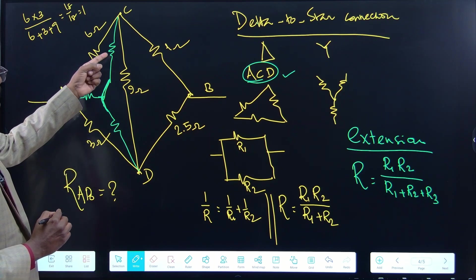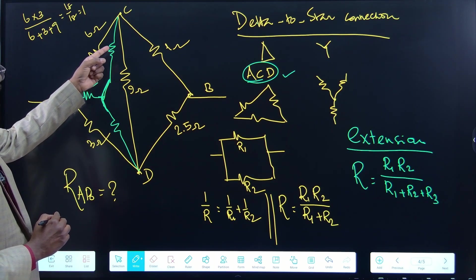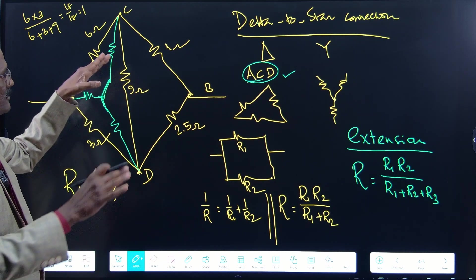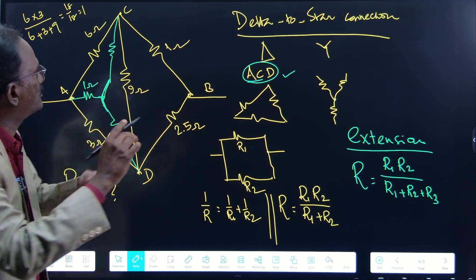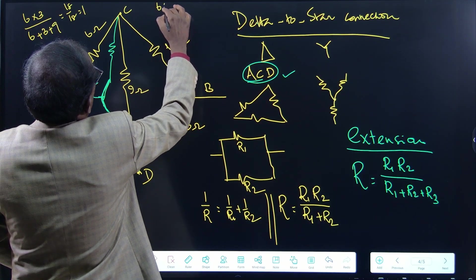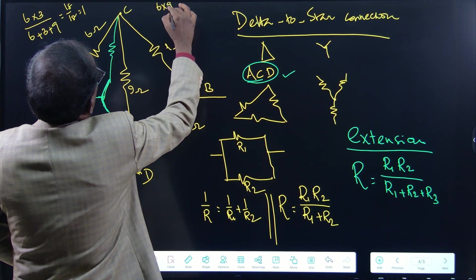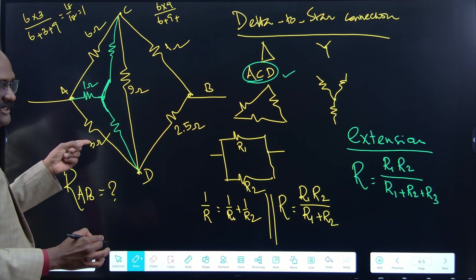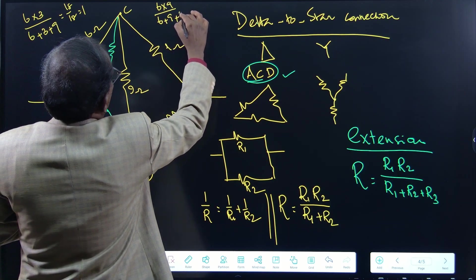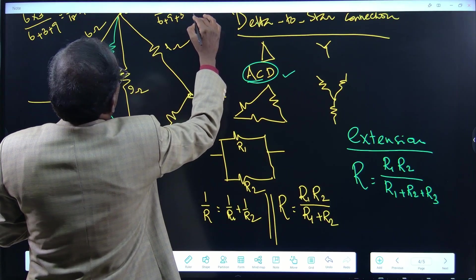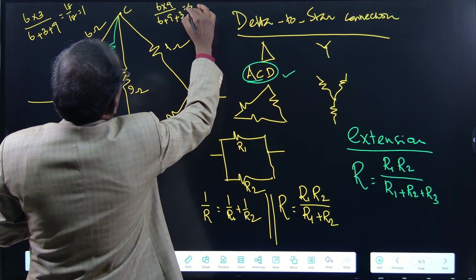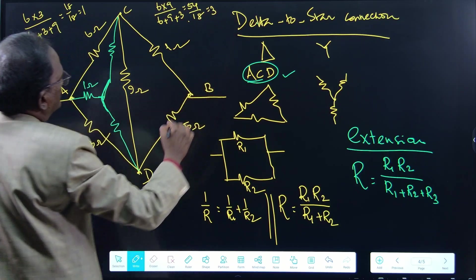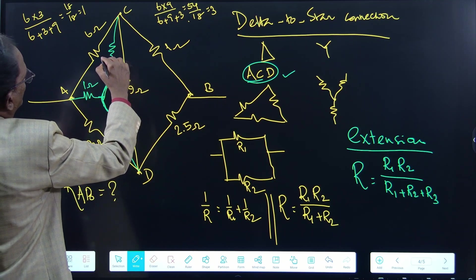At junction C, the two adjacent resistors are 6 ohms and 9 ohms (R1 and R2), and 3 ohms is R3. So R = 6×9 / (6 + 9 + 3) = 54/18 = 3 ohms.